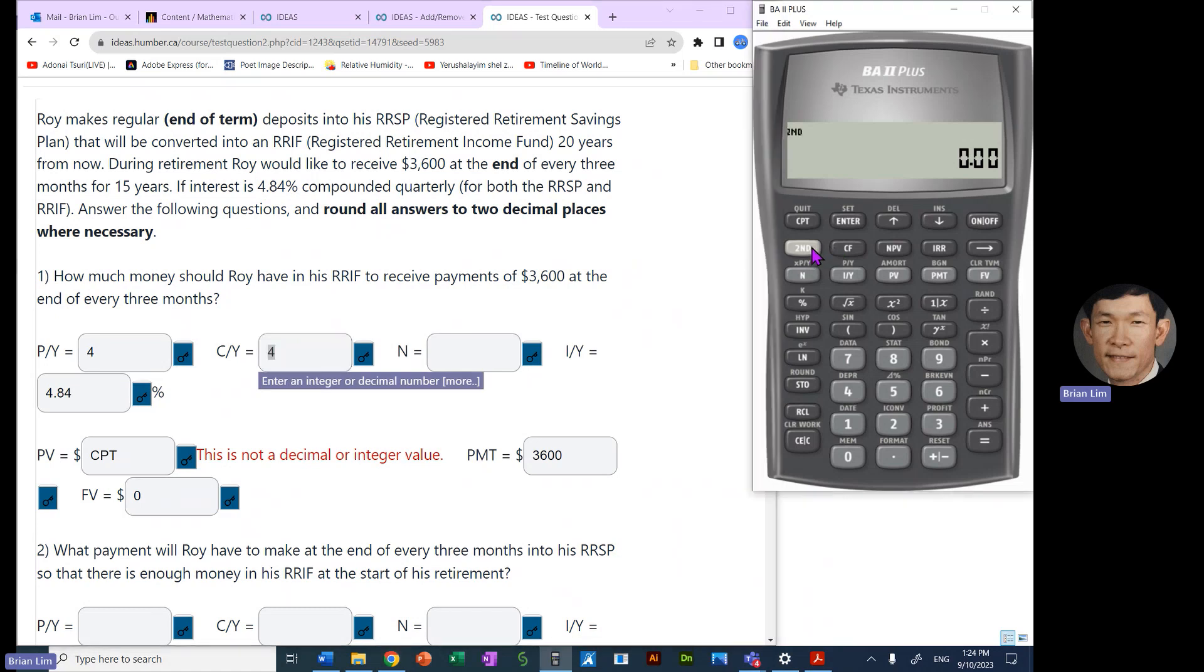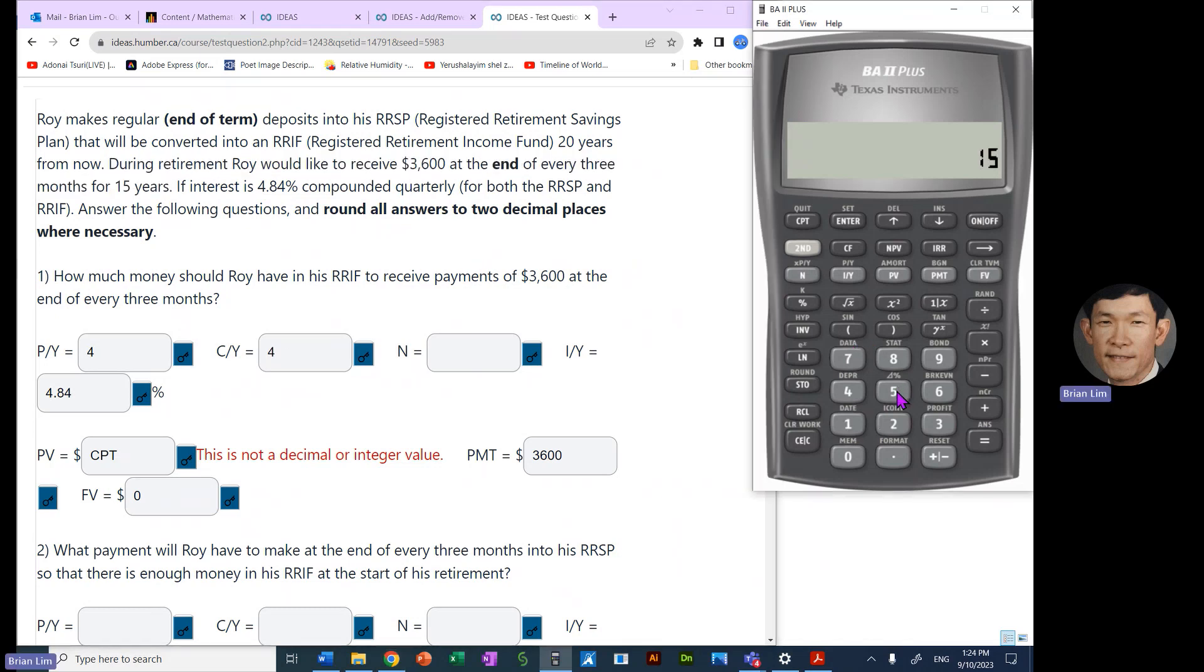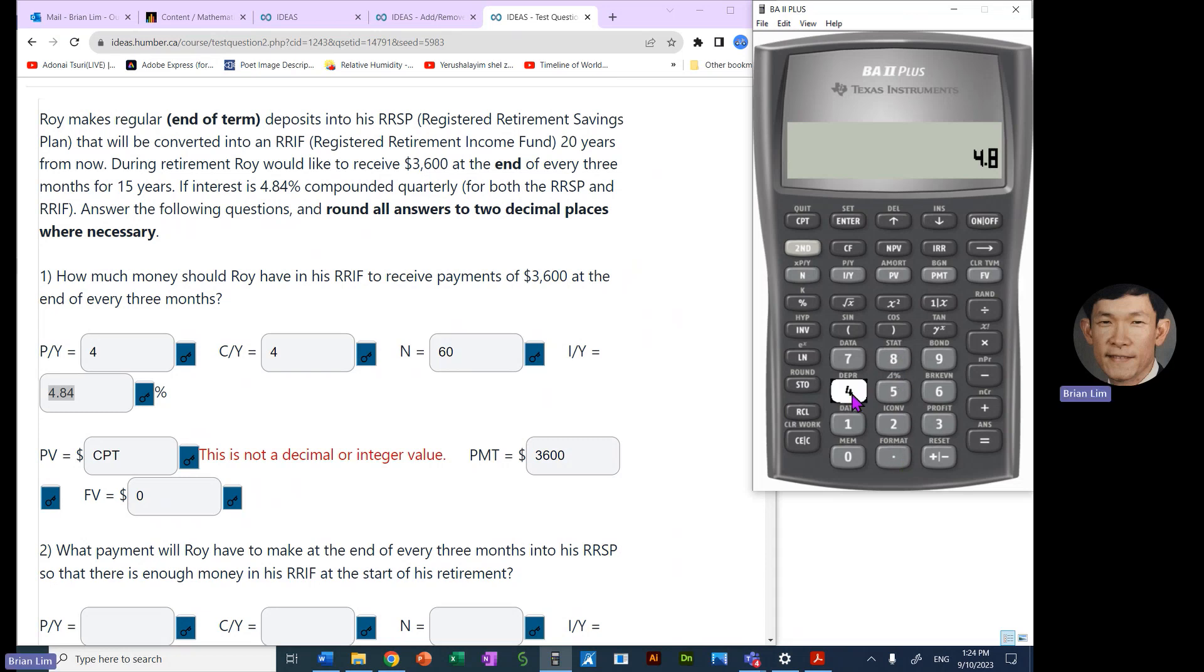So PY is four, and so is CY. Second IY, PY is four, and we enter, and the CY is also four, and we quit the menu. Now he would like to receive this for 15 years. This is during the retirement part, or the registered retirement income fund part. So we put in 15, then we go second and N, so N turns out to be 60. All right, so IY is 4.84, so we go 4.84, and we enter. Sorry, that is the interest. I have to go back and fix the value for N, so N is 60. We could put it in directly, or we could go back and put the 15 and go second, and N is 60. We recall IY, it's 4.84.